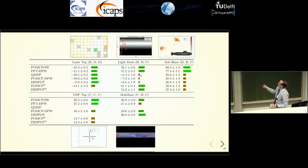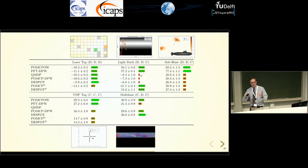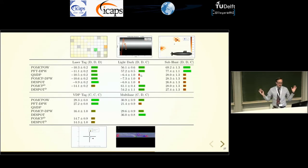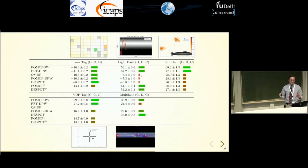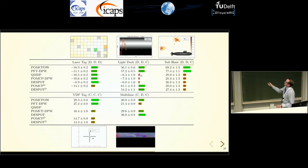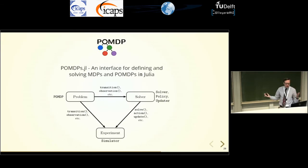Overall, POMCPOW only does the best in one of these problems — the VDP tag problem — but it does well in all of them. We think it's a good general-purpose algorithm and at least a baseline for continuous problems. The main takeaway is that all previous popular algorithms for online POMDPs can fail when the observation space is continuous and you need to do exploration. We've empirically demonstrated that these new algorithms break that barrier, and for realistic problems POMCPOW does better than PFT. We implemented all these in our pomdps.jl interface.